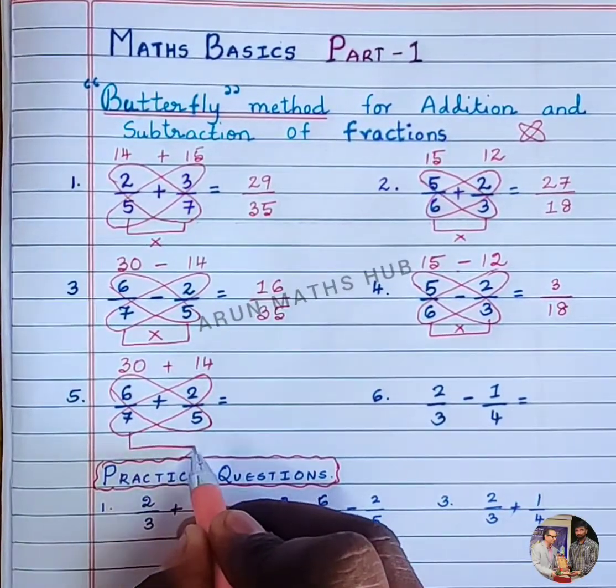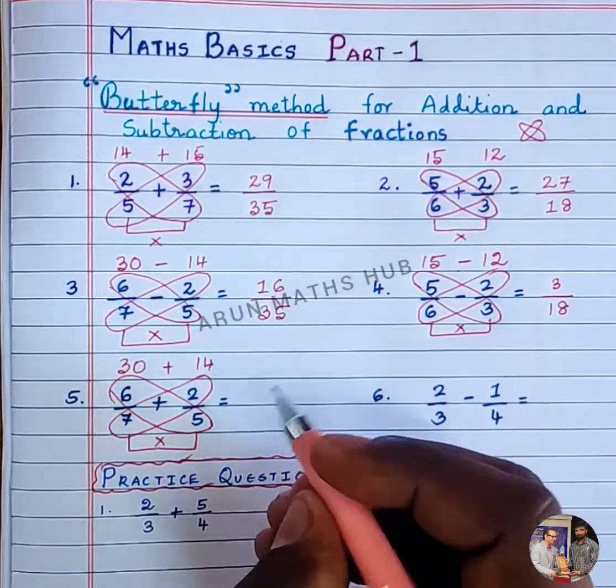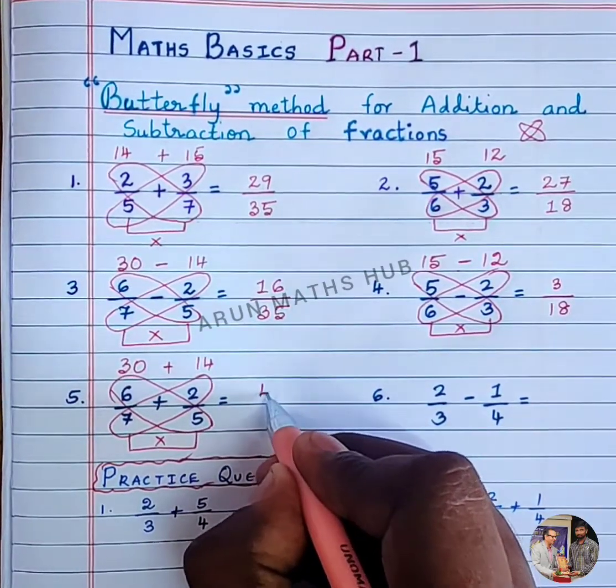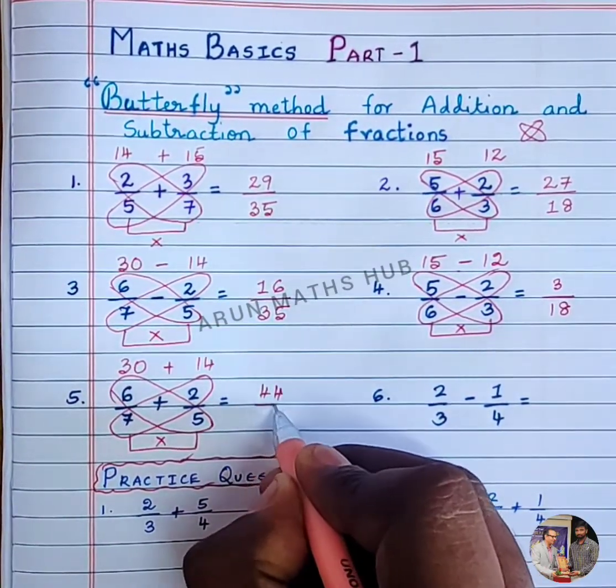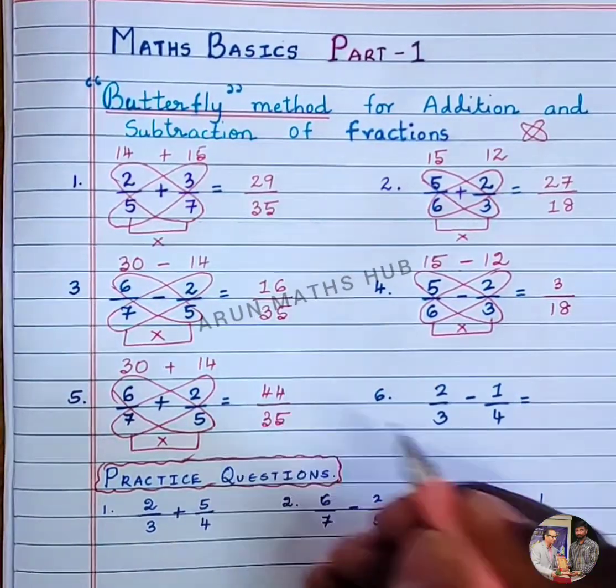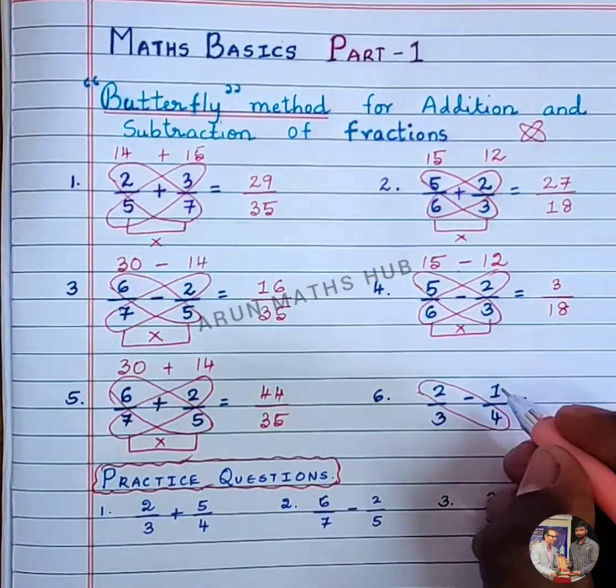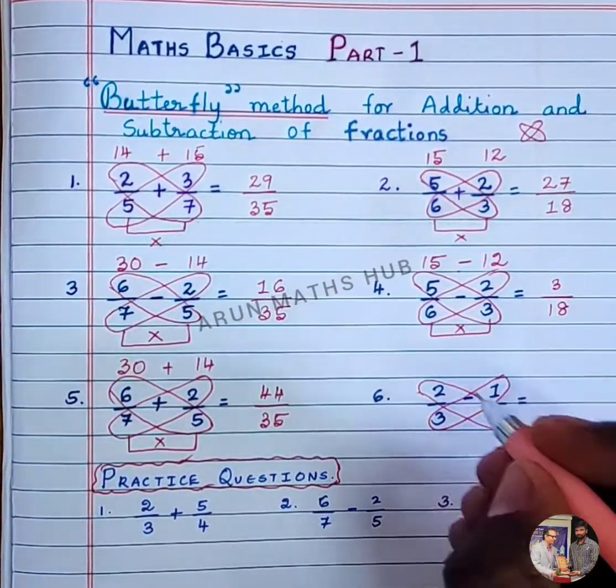to add because it is addition of fractions. Then you need to multiply both denominators. 30 plus 14 is 44, divided by 7 times 5, which is 35.